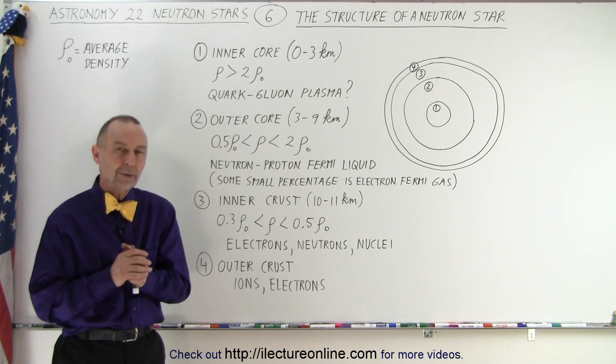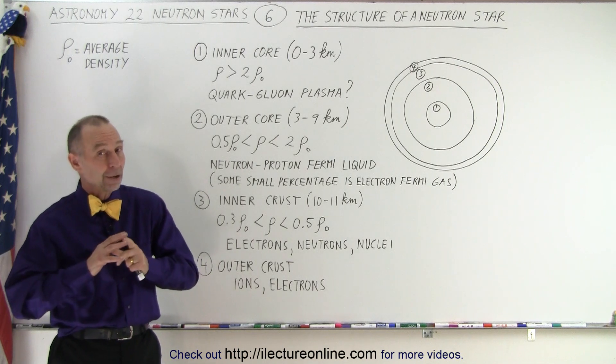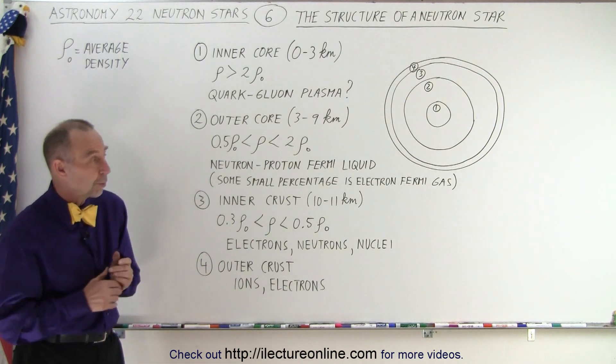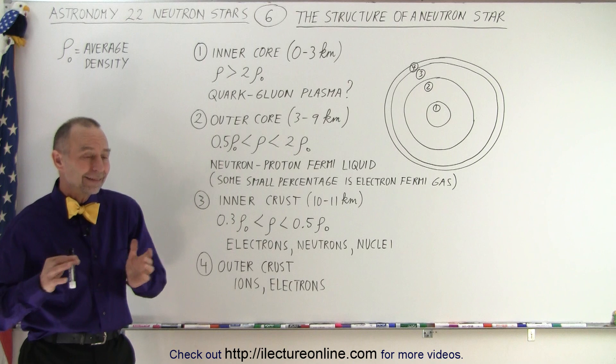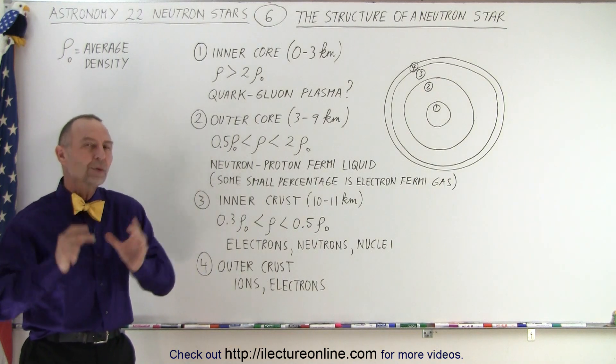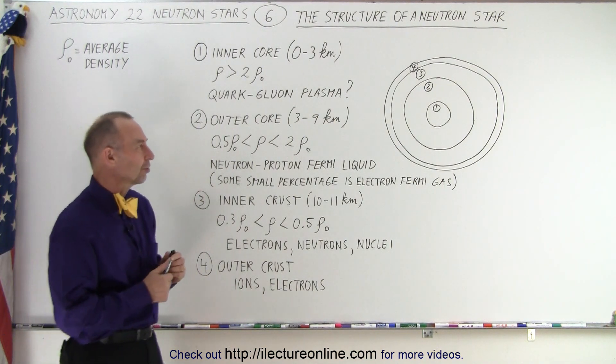So based upon that, they've come up with a model, and again, that model may or may not be correct, just to warn us, that states that there's potentially four different regions inside a neutron star.